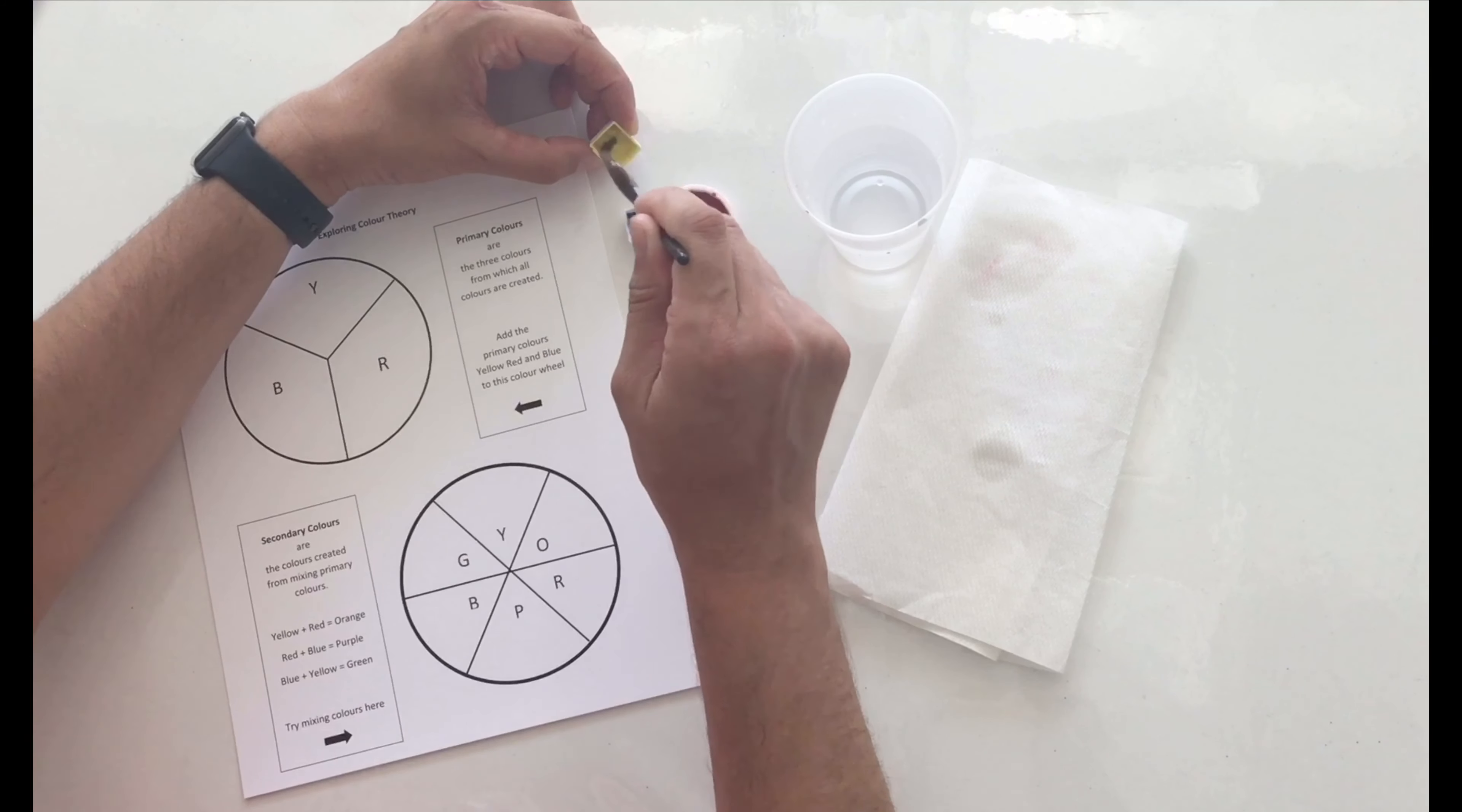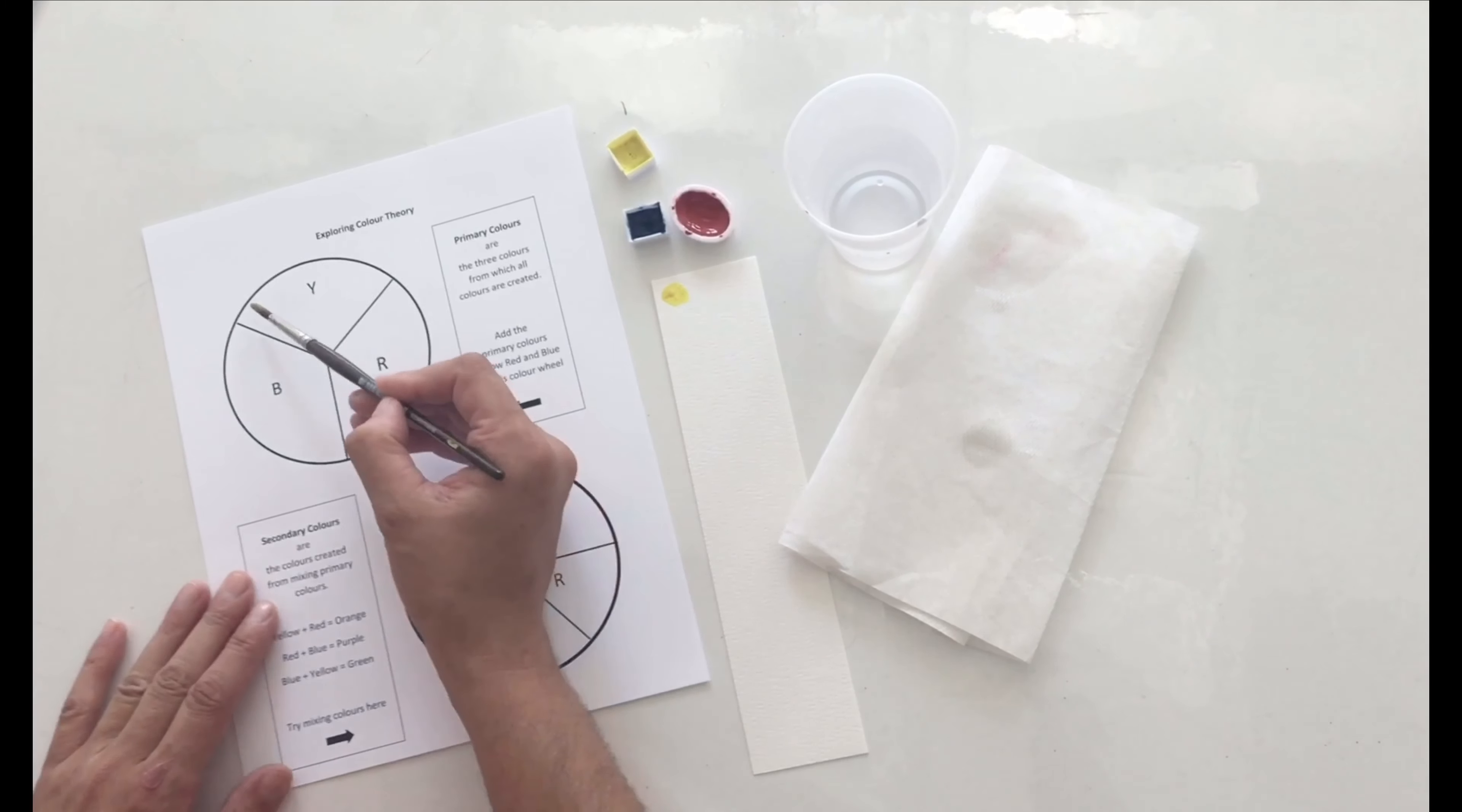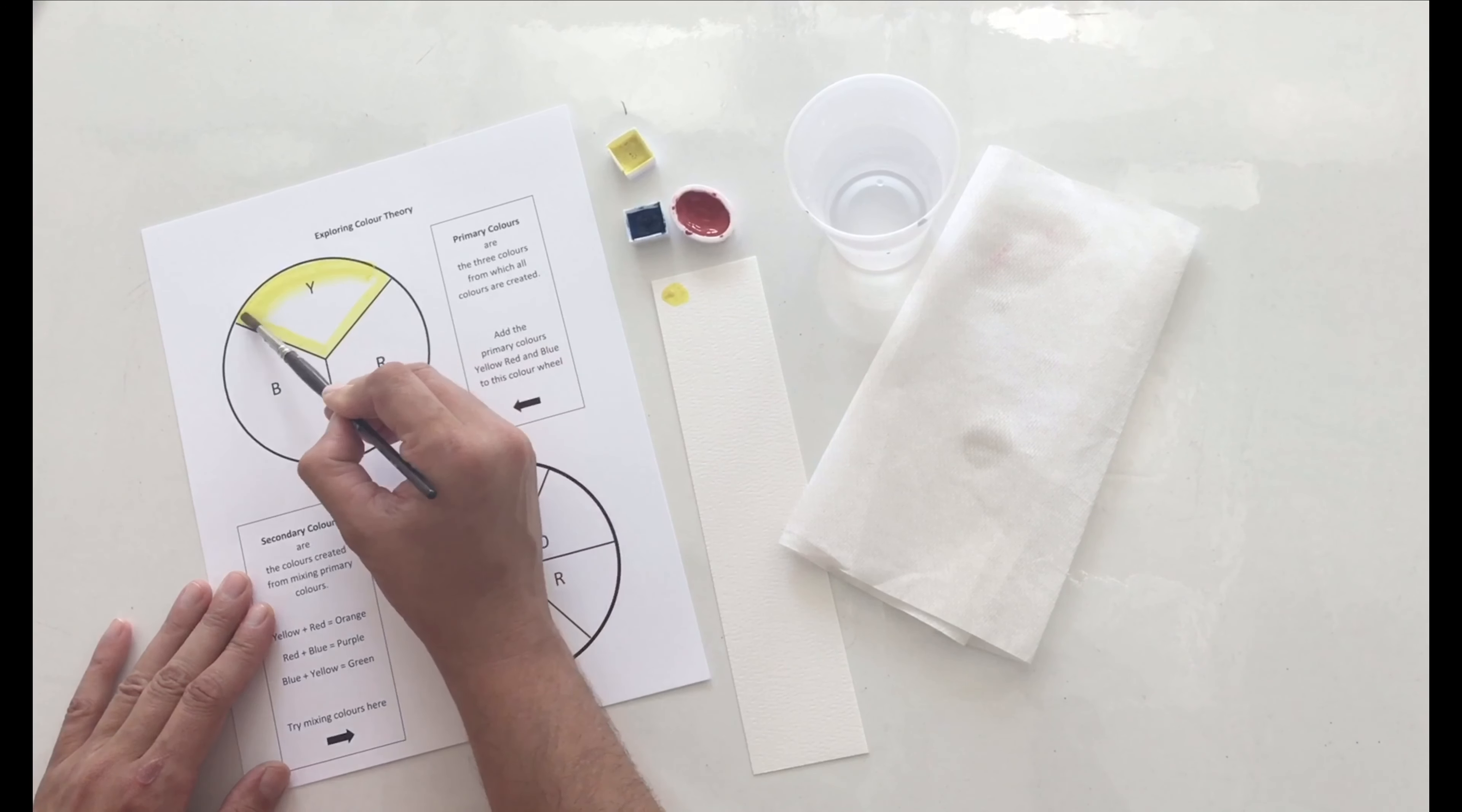Once you've got your paintbrush loaded up with some water, you can load it up with some paint as well. I like to use that little test strip just to practice and see the colors that come up, and then work on my project, starting to fill in that first yellow slice in the primary color wheel.